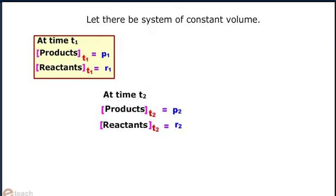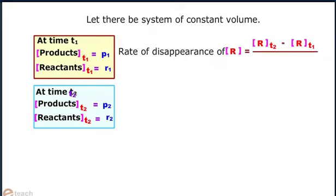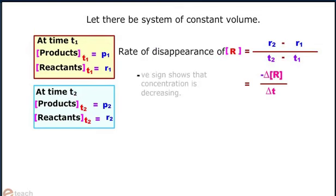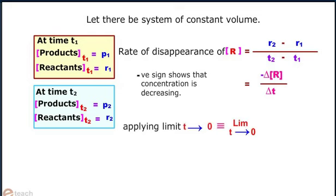Now, the rate of disappearance of R is equal to R2 minus R1 upon T2 minus T1, which is equal to minus del R by del T. The negative sign shows that concentration is decreasing. Now, applying limit that is T tending to 0, we get limit T tending to 0 minus del R by del T equals to dR by dT.